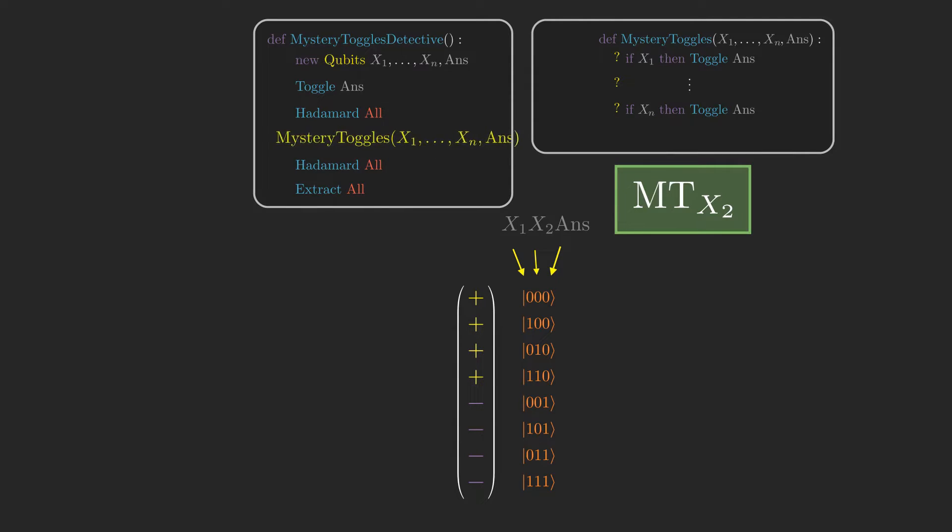Next is a single call to mystery toggles, which in each basis state toggles answer if and only if x2 is 1. There's something really neat that happens here because of the fact that previous to this step, all states where answer is 1 had negative amplitudes, and all states where answer is 0 had positive amplitudes. The consequence of this is that when we call mystery toggles, the basis states where answer doesn't get toggled still have a positive amplitude if answer is 0 and a negative amplitude if answer is 1, just like in the previous state vector. But the basis states where answer gets toggled now have a negative amplitude if answer is 0 and a positive amplitude if answer is 1.